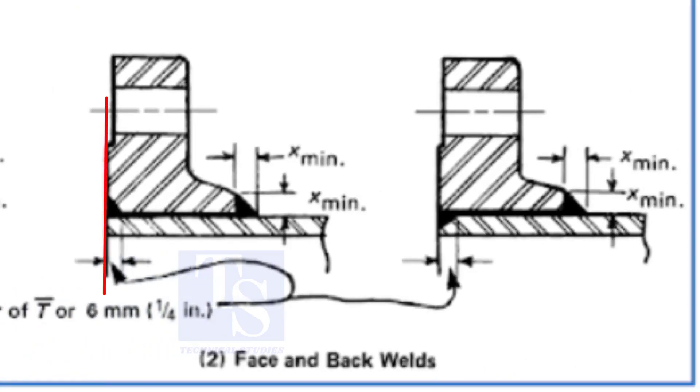In the second method, the face of the pipe and the flange are the same. Here, you can see the flange is beveled.